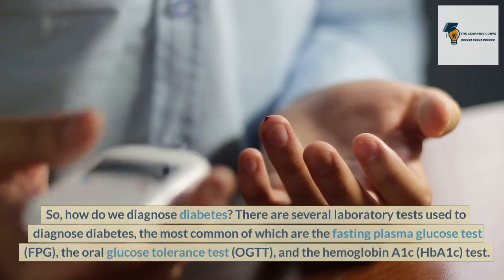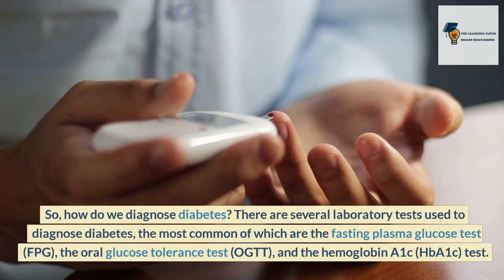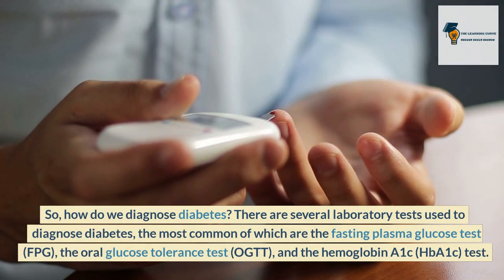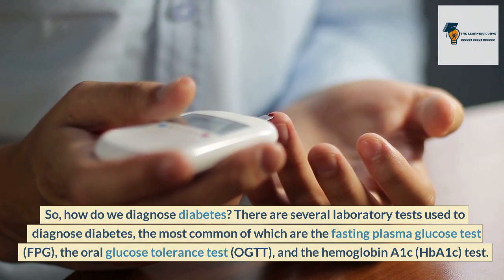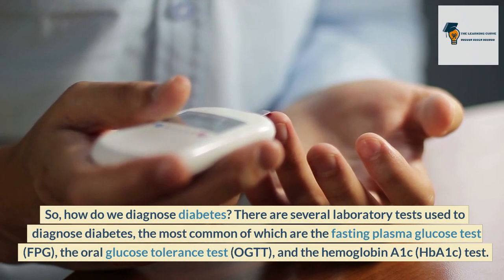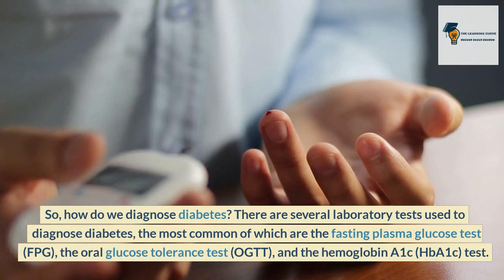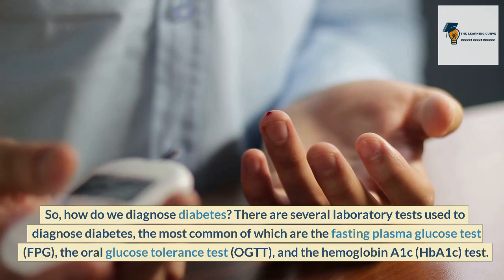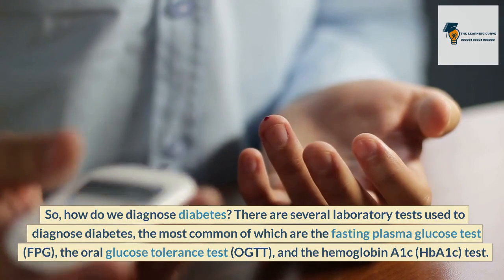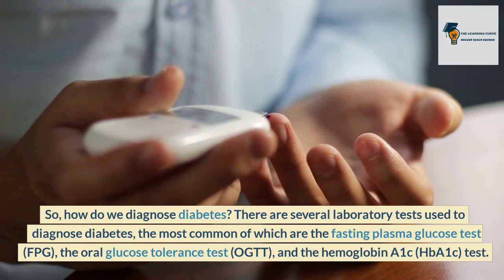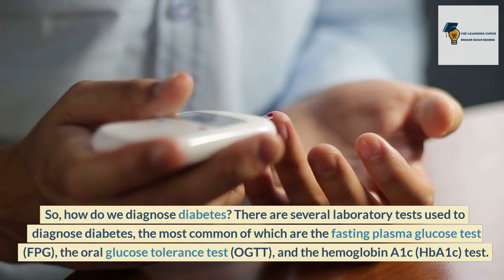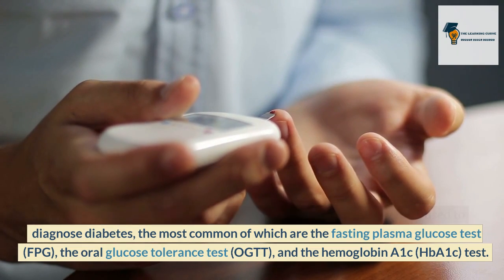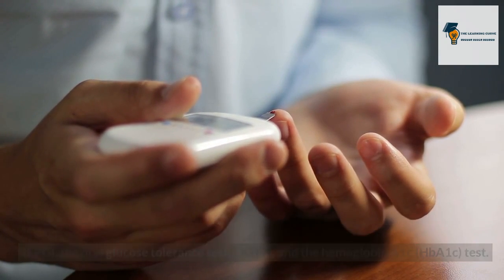So, how do we diagnose diabetes? There are several laboratory tests used to diagnose diabetes, the most common of which are the Fasting Plasma Glucose Test (FPG), the Oral Glucose Tolerance Test (OGTT), and the Hemoglobin A1c (HbA1c) Test.